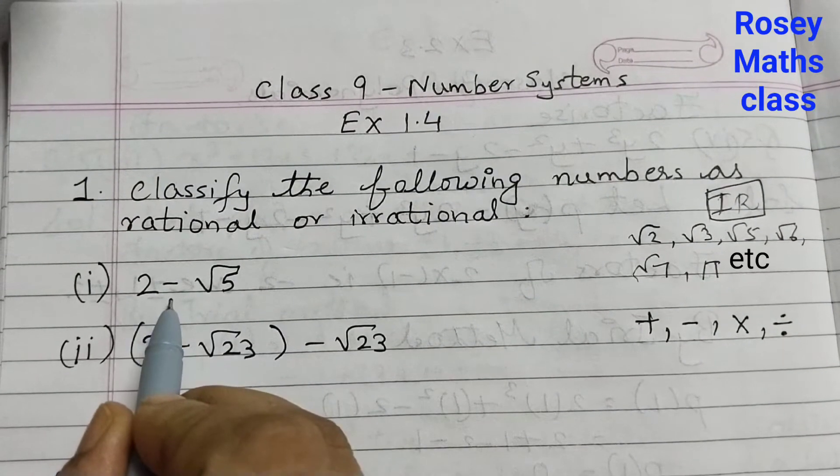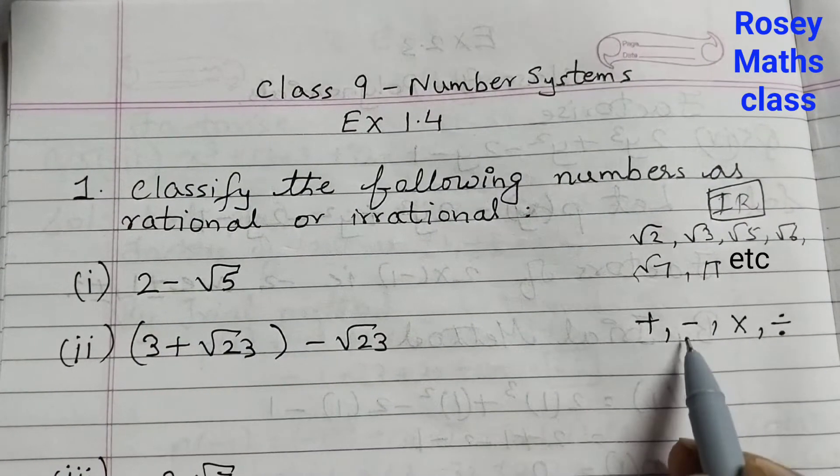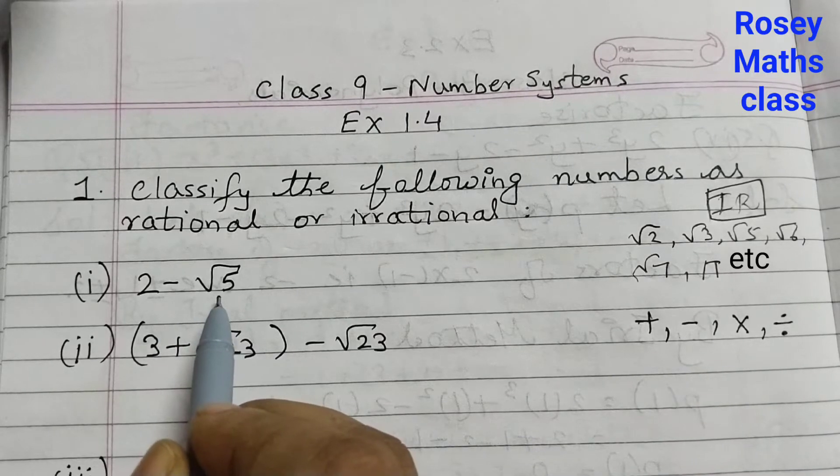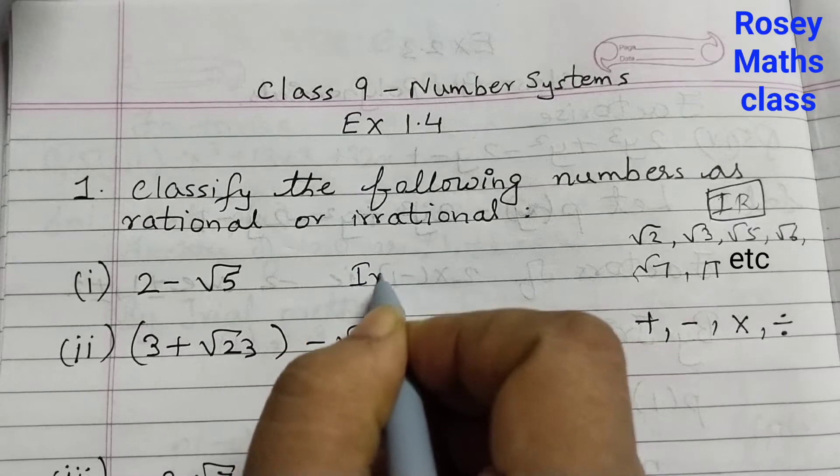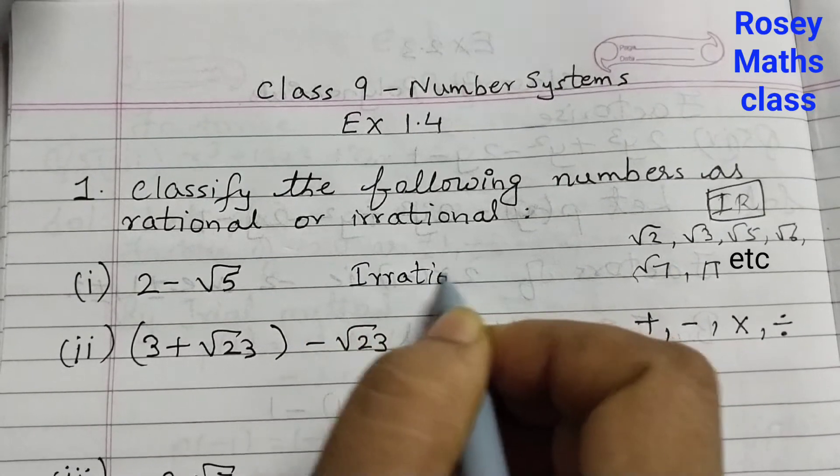First one, 2 minus root 5. Here we are subtracting an irrational number. So this whole thing will become irrational. The first expression is irrational.